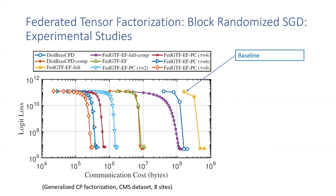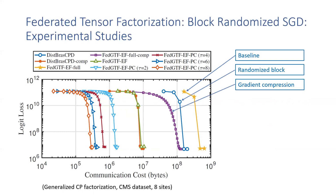If we look from right to the left, the rightmost one corresponds to the most expensive baseline approach, which communicates full gradients and full blocks. Moving to the left, if we use randomized block to update only partial gradients instead of full gradients,